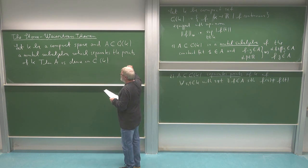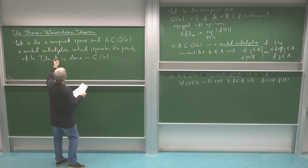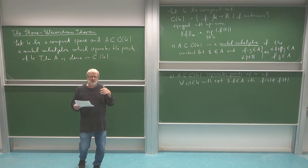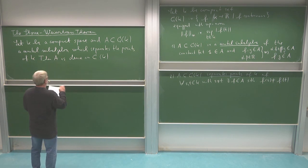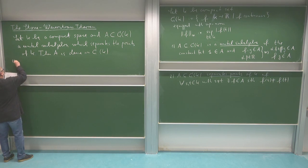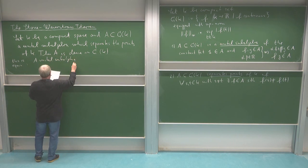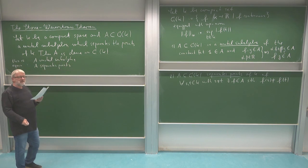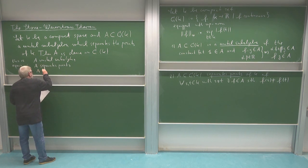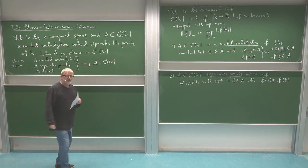We will prove it in a slightly different form. We are saying that something is dense in C of K if it has these properties. Going to the closure is the same as saying the closure is all of C of K. So instead of talking about something dense, we talk about something equal. To show a unital sub-algebra A which separates points is dense, if in addition A is also closed, then A must already be all of C of K.